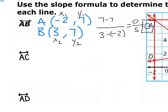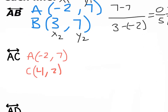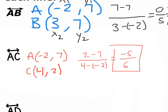Now let's look at AC. We already know point A is negative 2, 7. And C is 4, 2. So y2 minus y1 is 2 minus 7, and x2 minus x1 is 4 minus negative 2. We get negative 5 on top and 6 on the bottom. Negative 5 over 6 — that's our slope for AC.